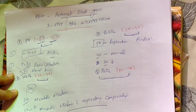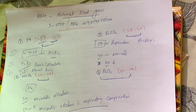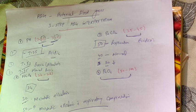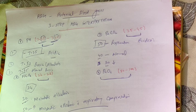That was all about ABGs — a three-step ABG interpretation formula you can use anywhere. It's very simple: you can easily diagnose a patient with either acidosis or alkalosis, and determine whether it is a respiratory or metabolic problem. Thanks for watching — comment which topic you want next, and kindly subscribe to our channel Medical Online for more videos.